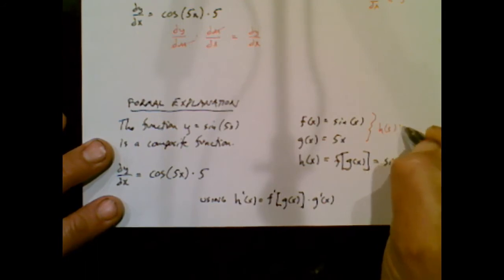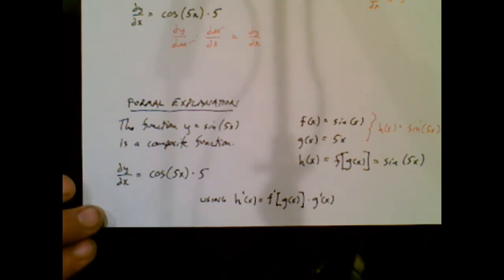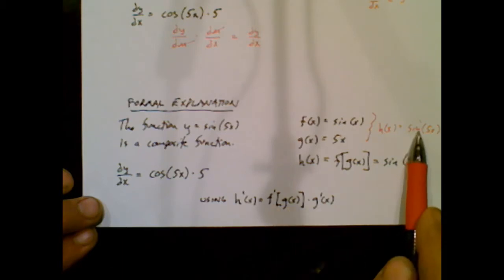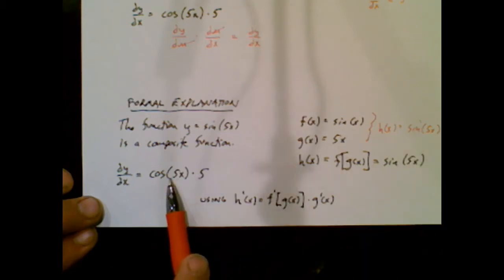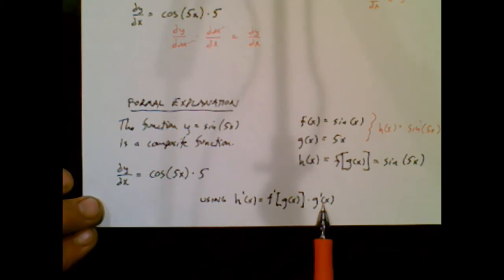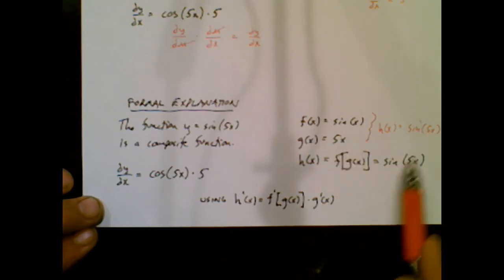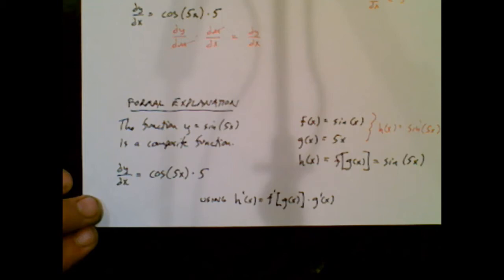So h of x equals sine of 5x. So when I do the derivative of f of g of x, it's cosine of 5x. When I do the derivative of g of x, the piece living inside, it's just 5. So I may have butchered that explanation, but know this.